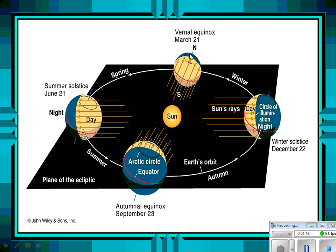Let's continue through the seasons. Coming through spring into summer — here's the summer solstice. The North Pole is tilted towards the Sun, so it's going to be hotter for the Northern Hemisphere in the summer. The line for that on your notes is right between the Sun and the picture of the Earth.